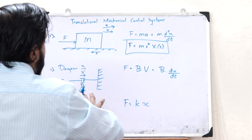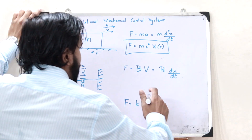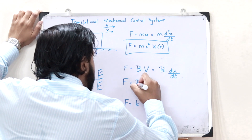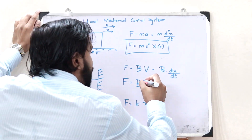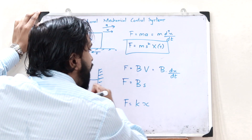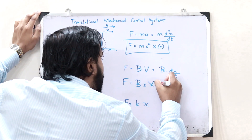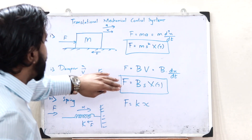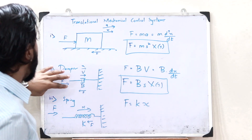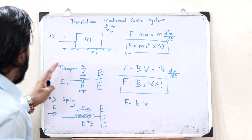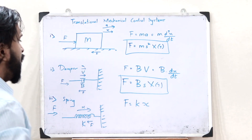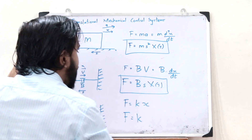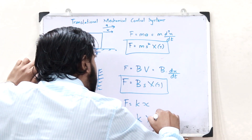Similarly, for the damper, the Laplace transform gives F equals b — and since it is a first order derivative we just have to put one s — so F equals b·s·X(s). That's as simple as that. And finally, in the case of the spring, we get F equals k·X(s).